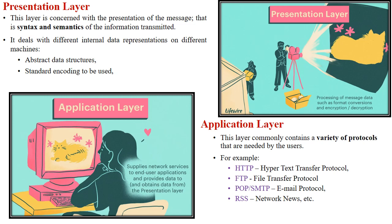Next is the application layer. This layer has many protocols needed by users to transfer data and supply network services. For example: HTTP is used when requesting a web page from Google; FTP (File Transfer Protocol) is used when transferring a file; SMTP (Simple Mail Transfer Protocol) is used for sending and receiving mail; and RSS is used for news feeds. These are the different protocols used in the application layer according to the user's requirement.